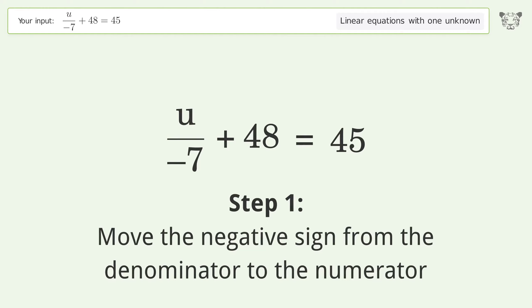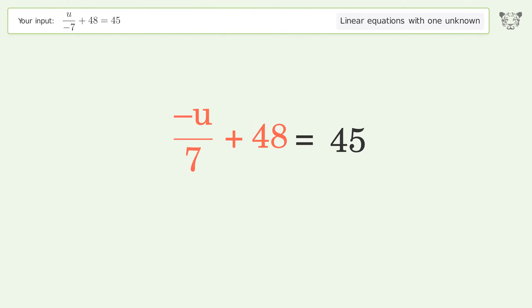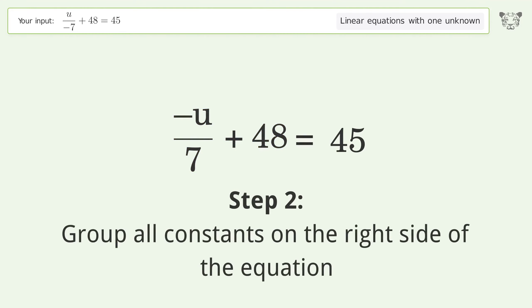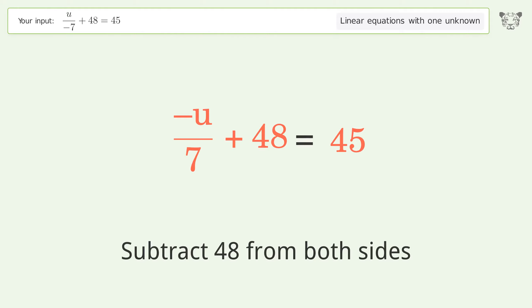Move the negative sign from the denominator to the numerator. Group all constants on the right side of the equation. Subtract 48 from both sides.